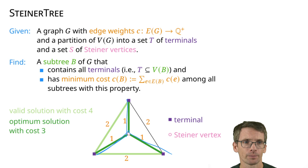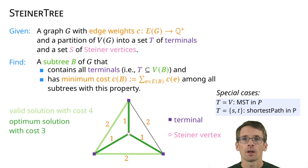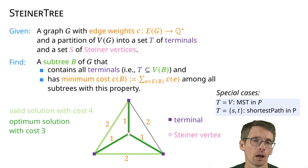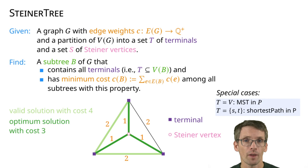There are some special cases. If all vertices are terminals, then asking for the minimum Steiner Tree is actually simply asking for the minimum spanning tree — that is easy. Also, if only two of the vertices are terminals, then it's actually a shortest path query — also easy. But the Steiner Tree problem in general is actually NP-hard, so it does make sense to look at approximation algorithms.